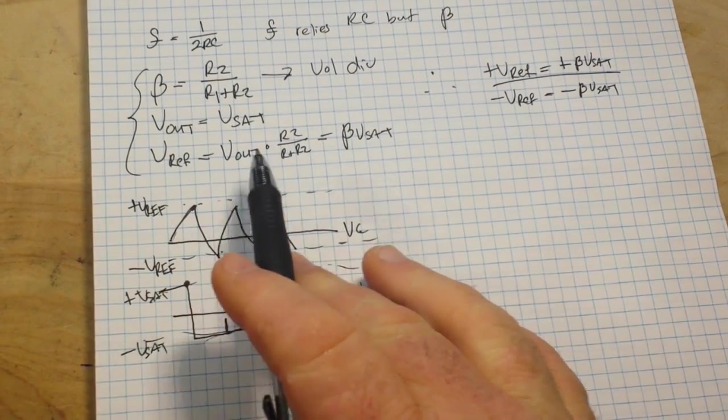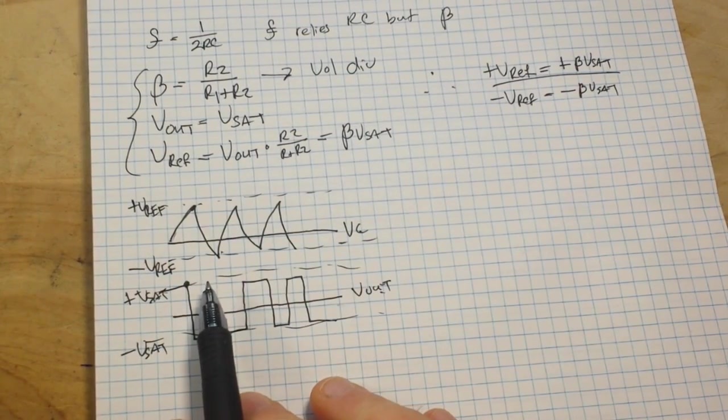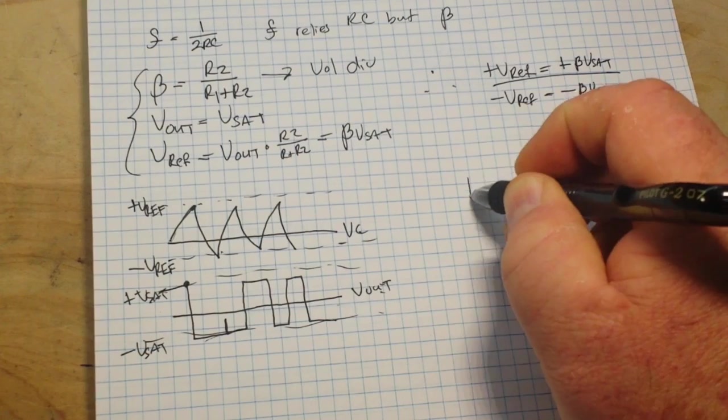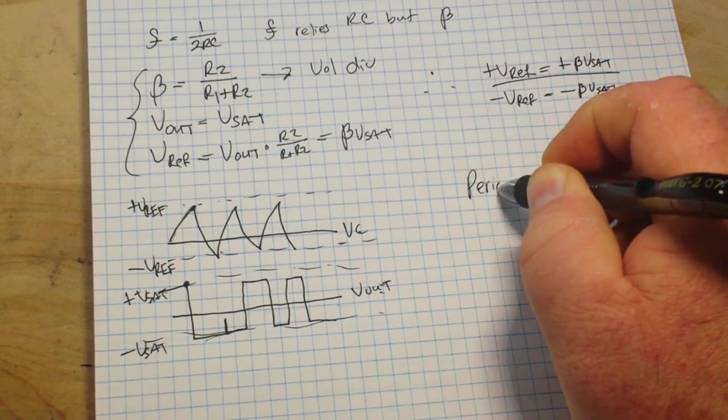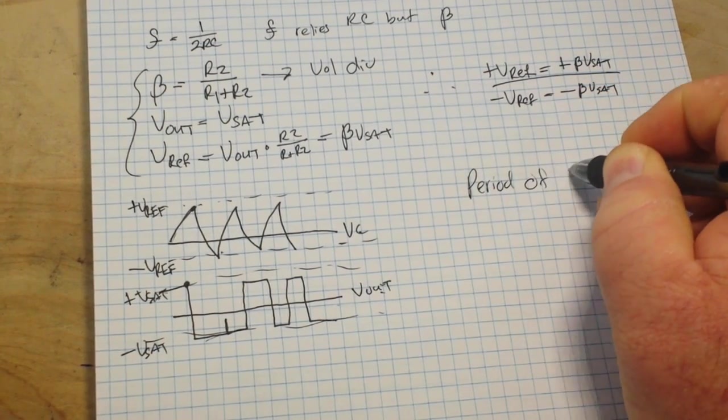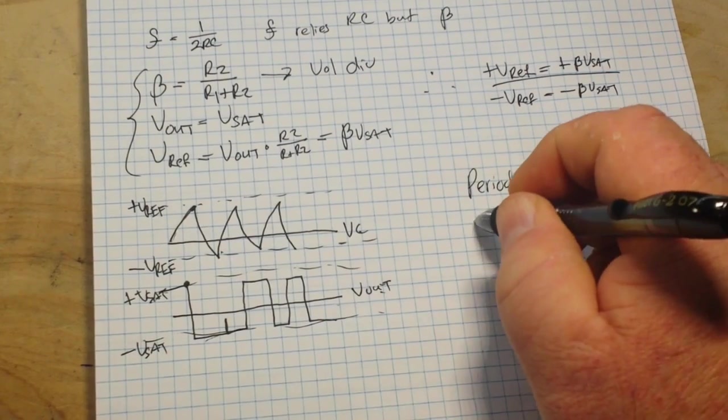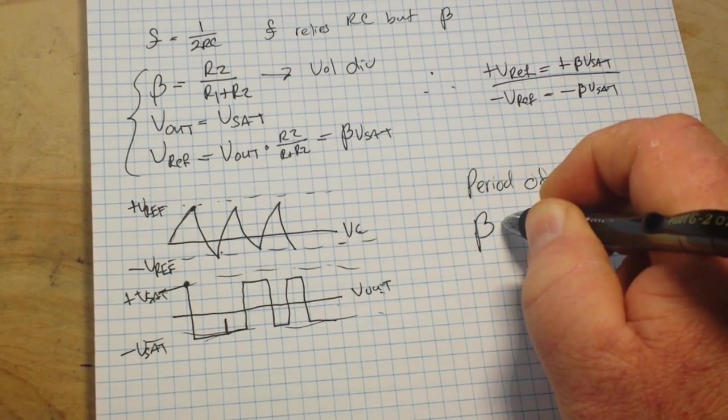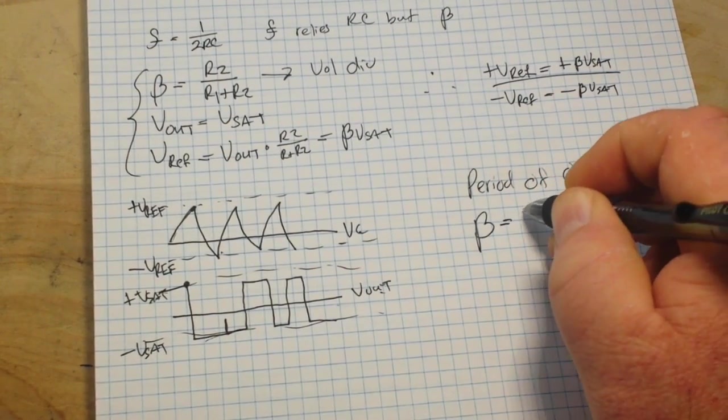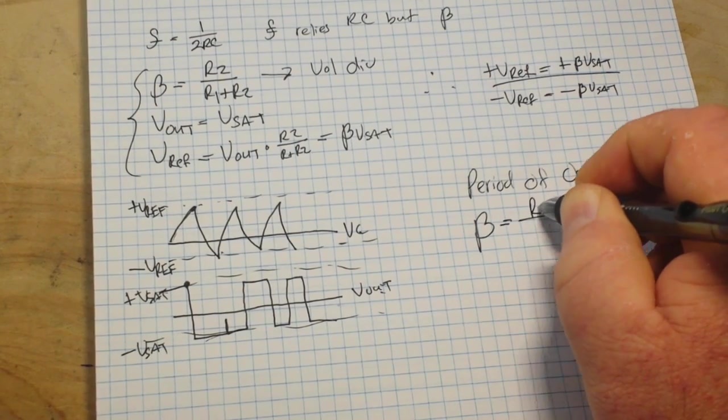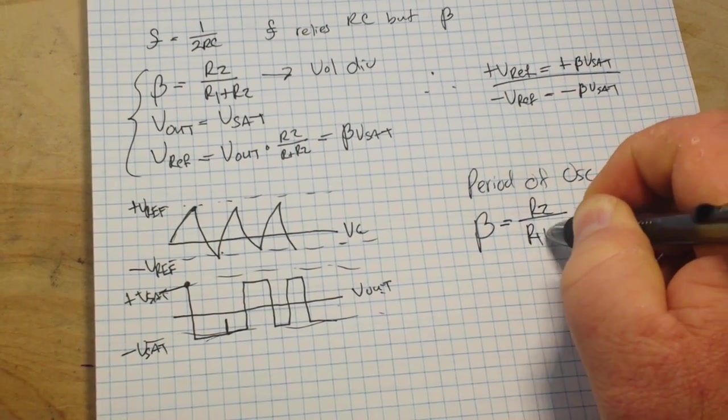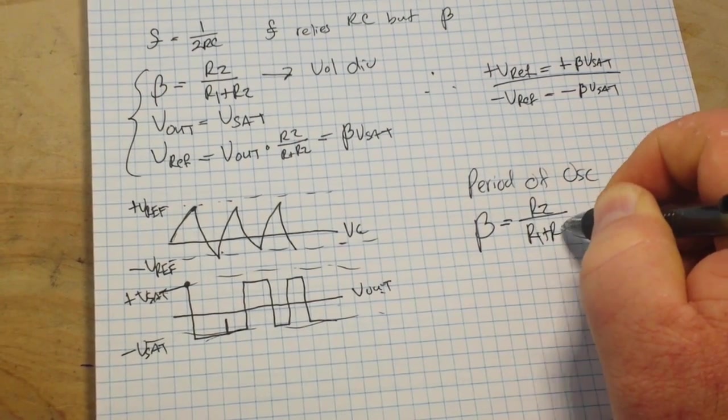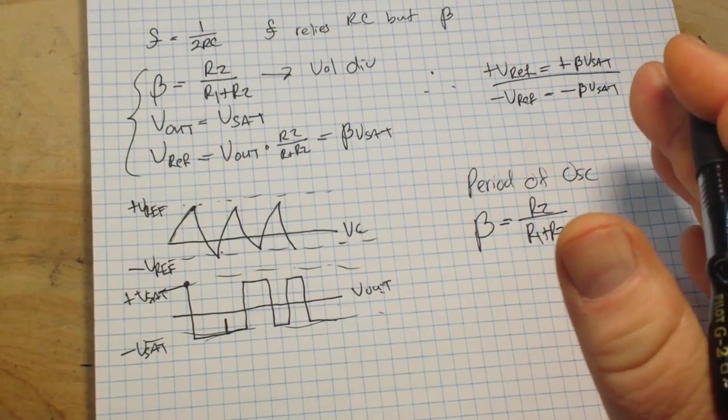So we have our formulas and we know what the formulas reference. So now we can figure out our period of oscillation. And for that we need to remember our feedback β of R2 over R1 plus R2, our basic voltage divider stuff, right?